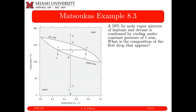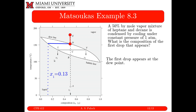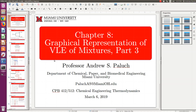Example 8.3: a 50 mol% vapor mixture of heptane and decane is condensed by cooling at constant pressure (1 atm). What is the composition of the first liquid drop that forms? Starting from vapor and cooling down, we draw a vertical line at x = 0.5 and decrease temperature until we hit the dew line. The first drop of liquid appears at the dew point, and its composition is read from where the isotherm intersects the bubble line.